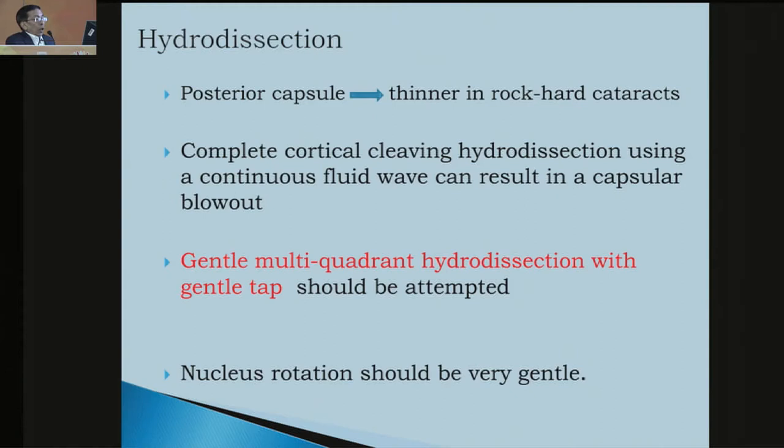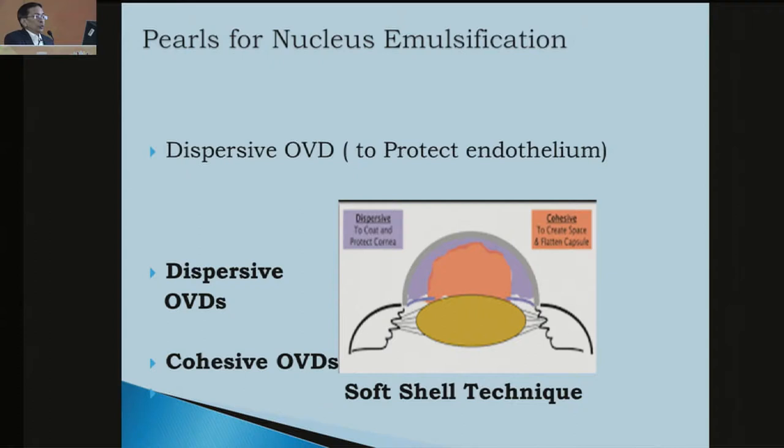Under hydrodissection, the posterior capsule is thin in the rock-hard cataract. Complete cortical cleaving hydrodissection using a continuous fluid wave can result in a capsular blowout. So gentle multi-quadrant hydrodissection with a gentle tip should be attempted. Nucleus rotation should also be gentle. Use a good dispersive viscoelastic.